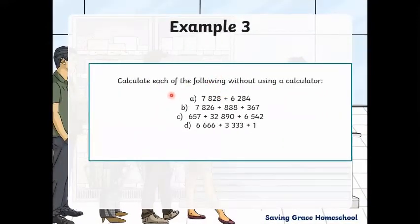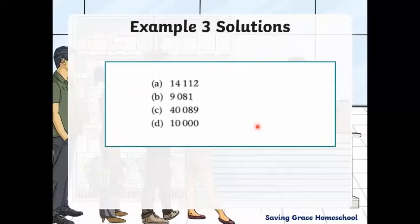Example 3: Calculate each of the following without using a calculator. We have 7,828 plus 6,284. Question B, we have three different things we need to add here: 7,826 plus 888 plus 367. Question C: 657 plus 32,890 plus 6,542. Question D: 6,666 plus 3,333 plus 1. Those are the answers, so we're going to go through them.